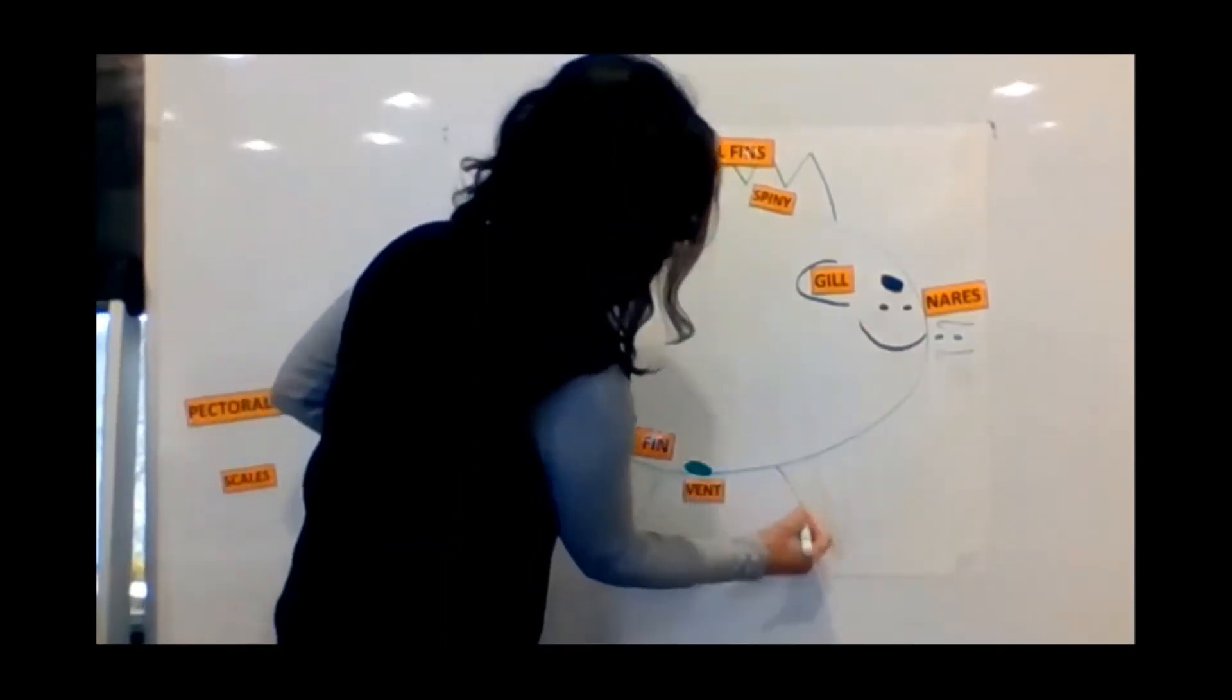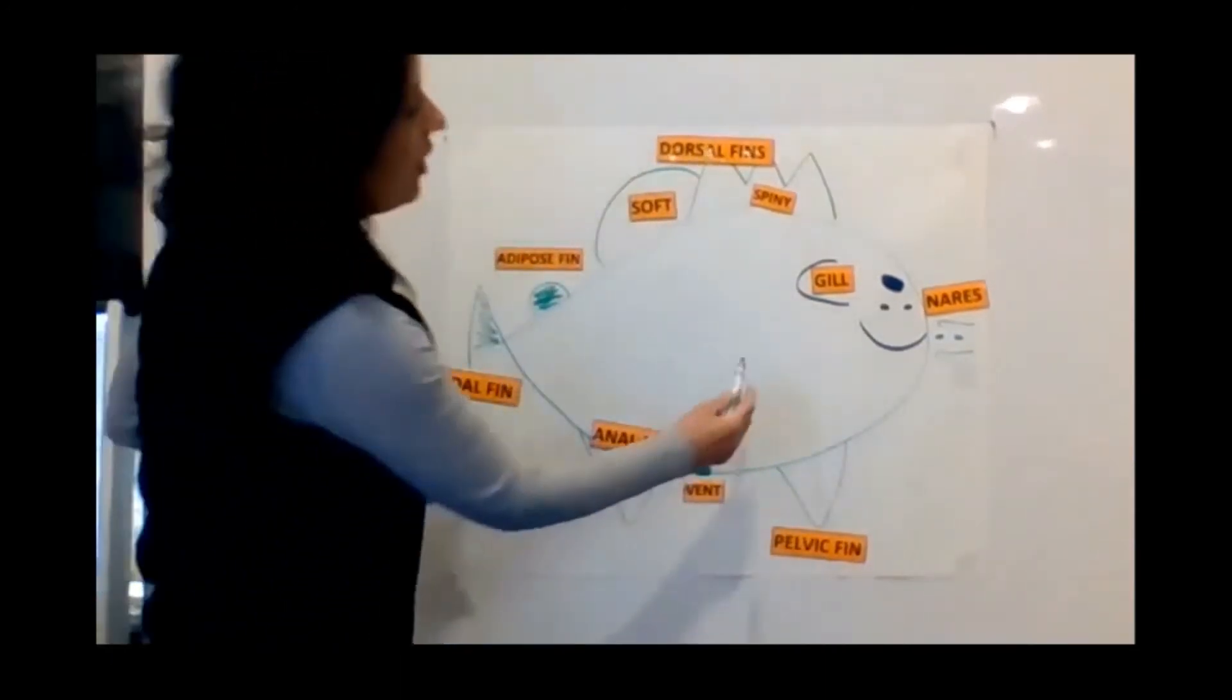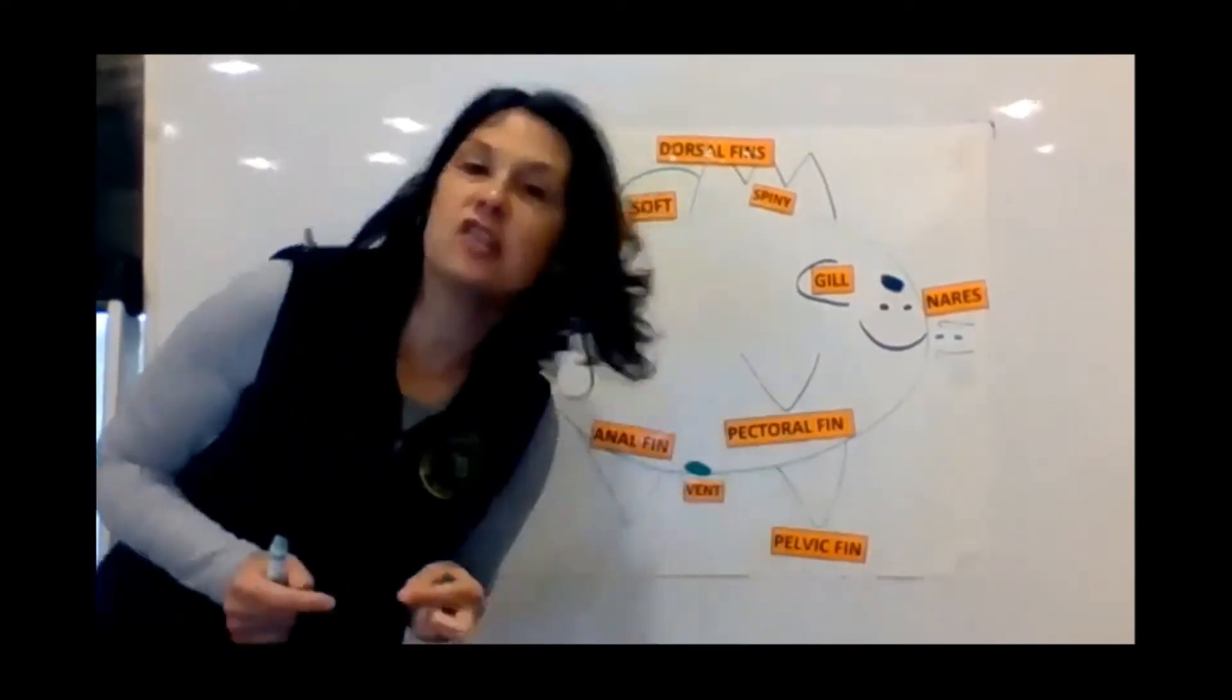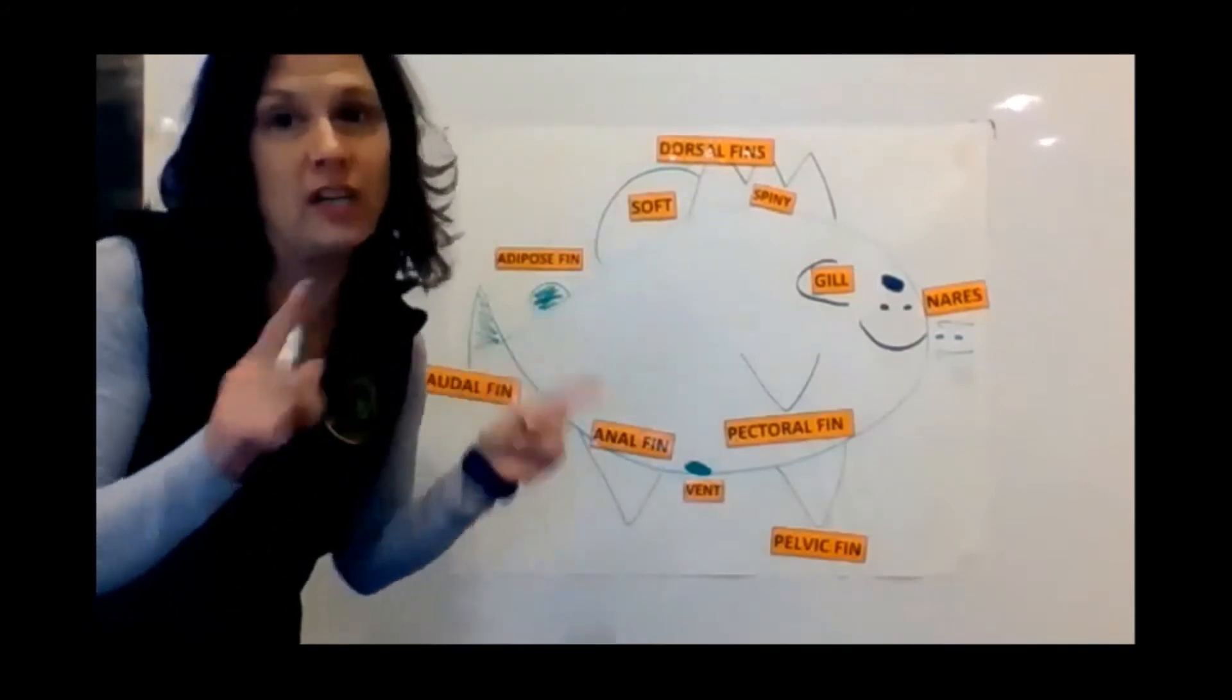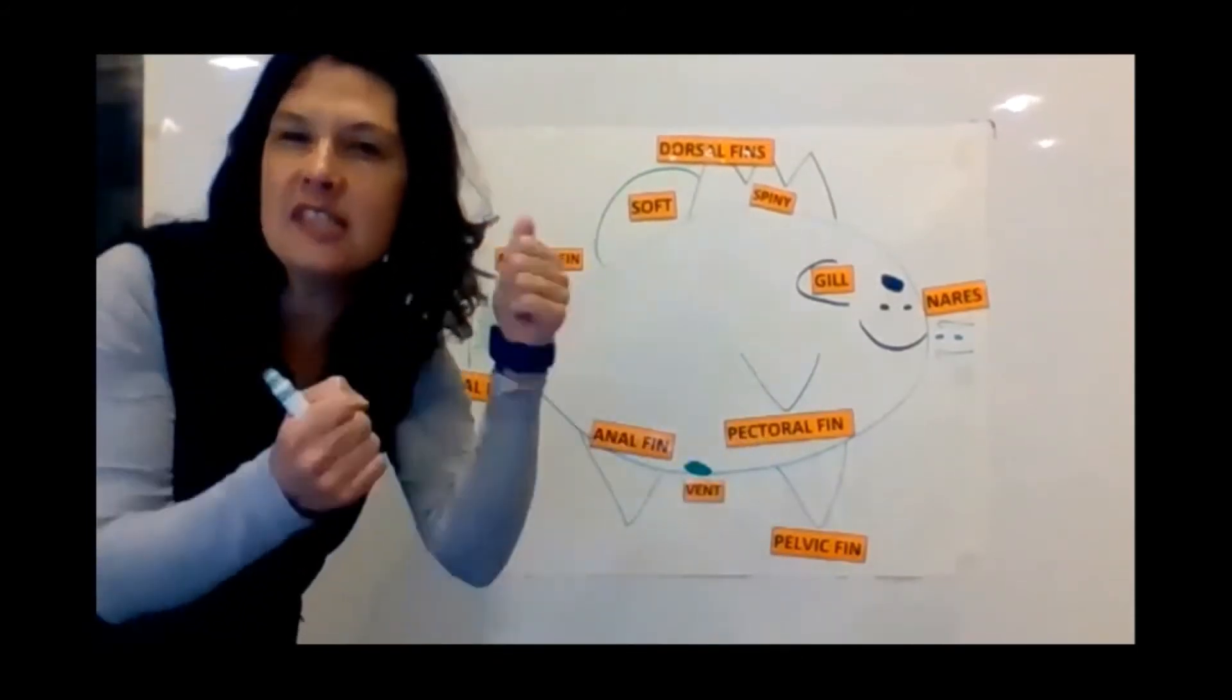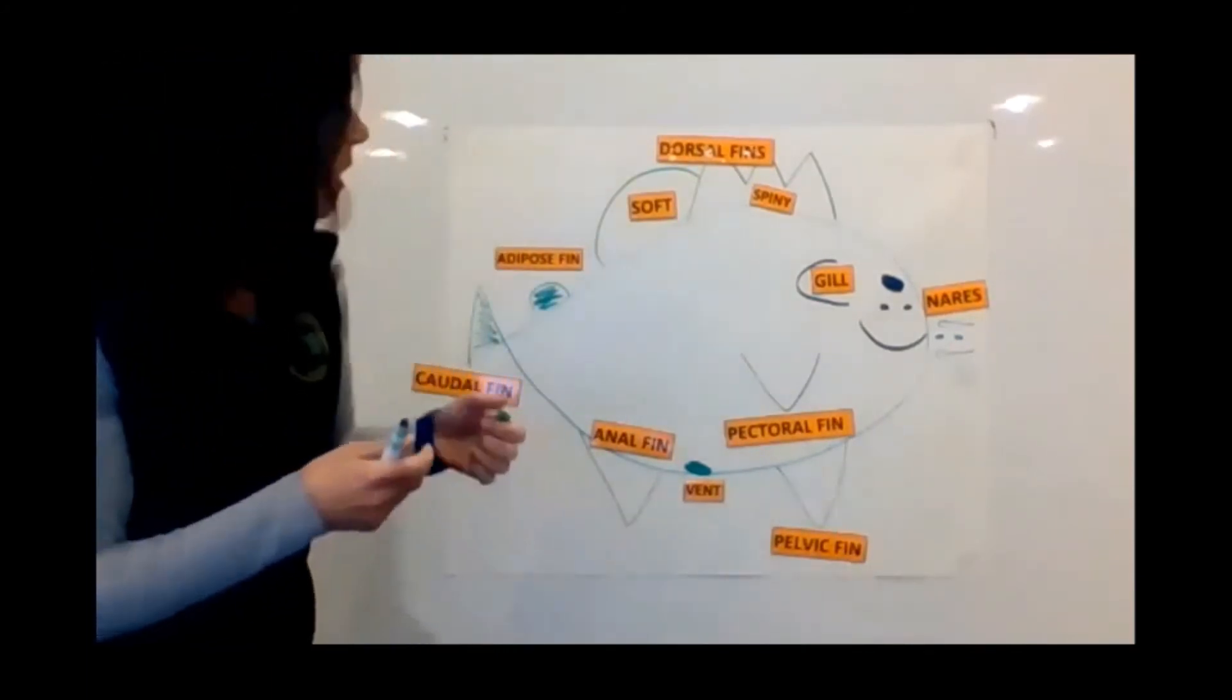We're going to put another fin up here called the pelvic fin. And then one right above it here called the pectoral fin. These two fins are actually in pairs, so there's one on each side. You can think of them like a steering wheel or brakes on a car. They help the fish steer and stop.